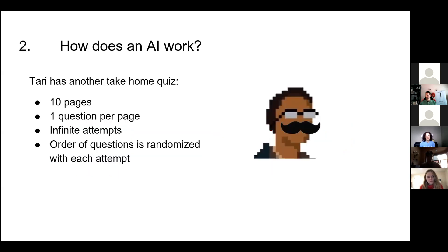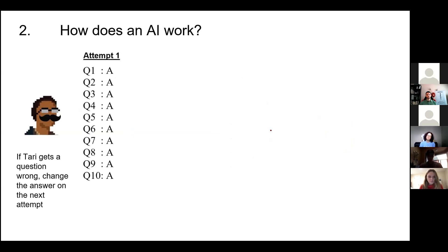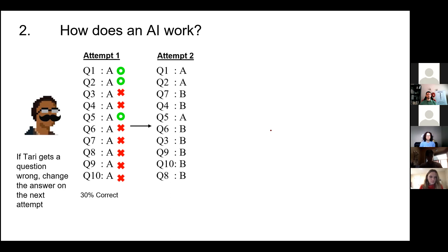New take-home quiz: this time it's ten questions long, again with infinite attempts, and the order of questions is randomized to prevent memorizing the answer series. Terry, being exceptionally lazy, sets all answers to A and hits submit. Terry fails abysmally — only 30% correct, only slightly better than guessing at random. On the second attempt, if Terry gets a question right, leave that answer alone; if wrong, change it and try again. The score improves a little bit with each successive try.